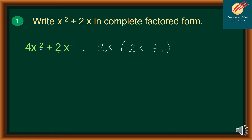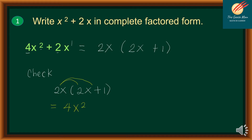So therefore, 4x squared plus 2x is the same as 2x times (2x + 1). To verify, let's multiply 2x times (2x + 1). Distributing: 2x times 2x is 4x squared, and 2x times 1 is 2x. So therefore, the factors of 4x squared plus 2x is equal to 2x times (2x + 1).